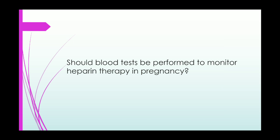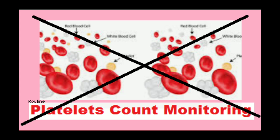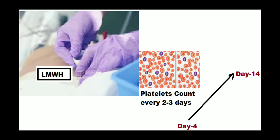Routine anti-Xa monitoring is not required unless the woman has an extreme body weight (less than 50 kg or 90 kg or more) or other complicating factors such as renal impairment or recurrent VTE. Platelet monitoring should not be performed routinely, except in post-operative patients or those receiving unfractionated heparin, where it should be performed every second or third day from day 4 to day 14 or until heparin is stopped.